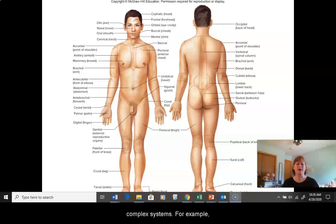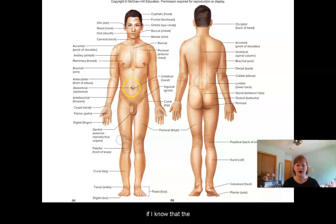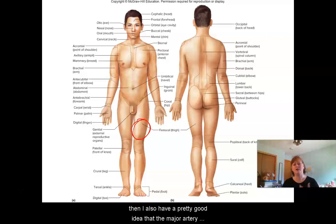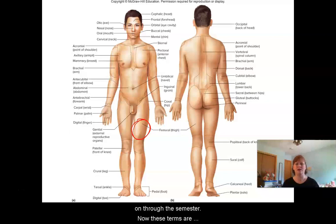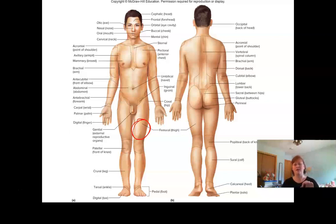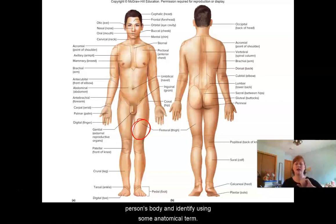For example, if I know that the anterior side of my thigh here is called femoral, then I also have a pretty good idea that the major artery running through that region is the femoral artery. So the terms are going to become useful as we move on through the semester. Now these terms are specifically for surface anatomy — different parts that I can see on the surface of a person's body and identify using some anatomical term.